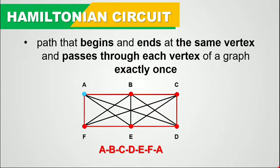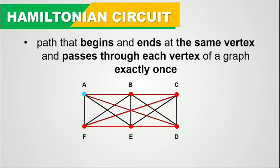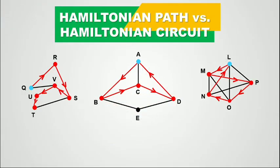We could also have this: if we start at vertex A and go to F, to E, to D, to C, to B, and then back to A — this is still an example of a Hamiltonian circuit. Or if we start at vertex A, then go to B, to C, to F, to E, to D, and then return to vertex A — this is still a Hamiltonian circuit, because we started and ended at the same vertex and passed through each vertex exactly once. Now let's try to identify the routes in these three graphs, whether they are Hamiltonian path or Hamiltonian circuit.